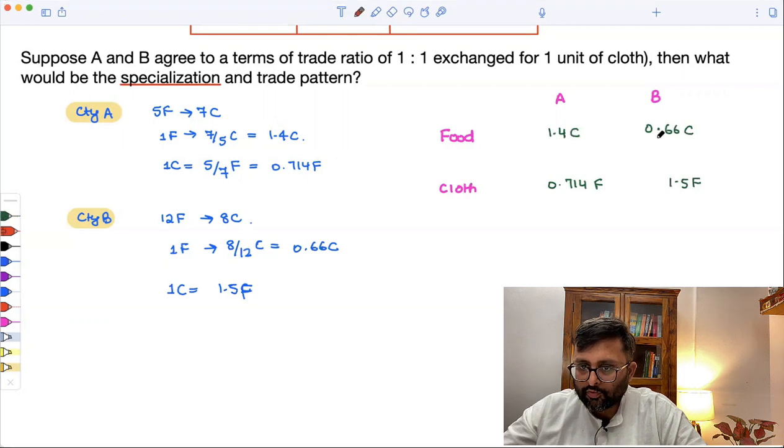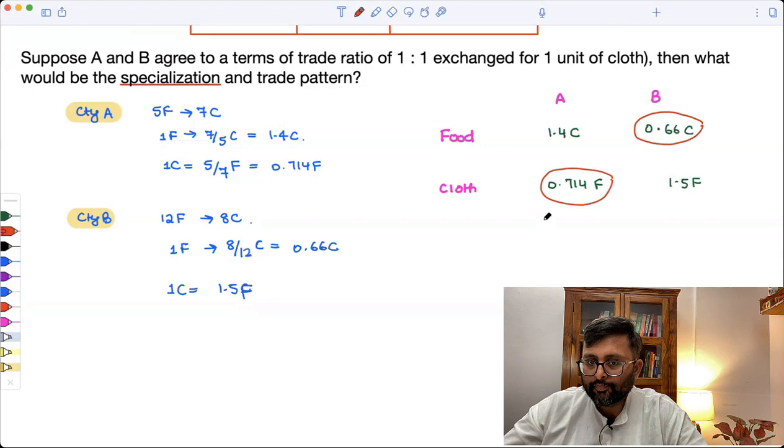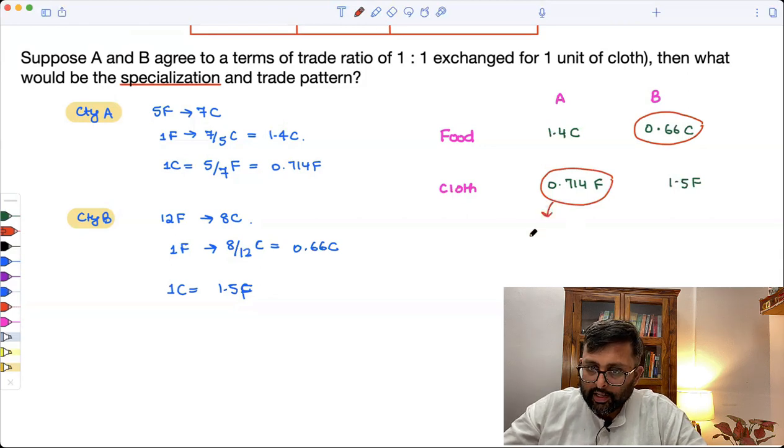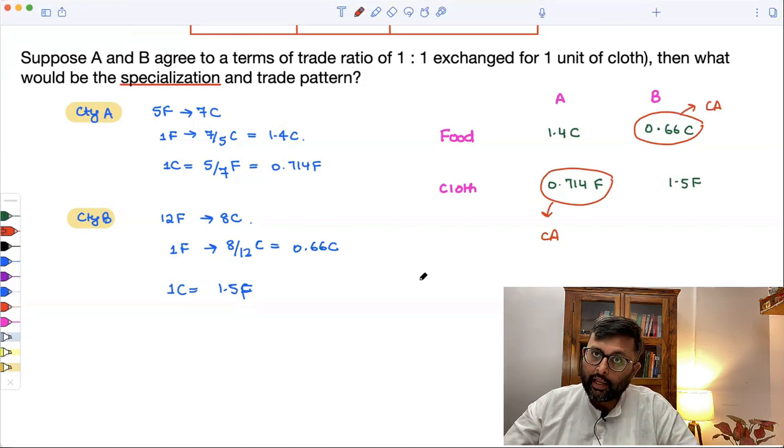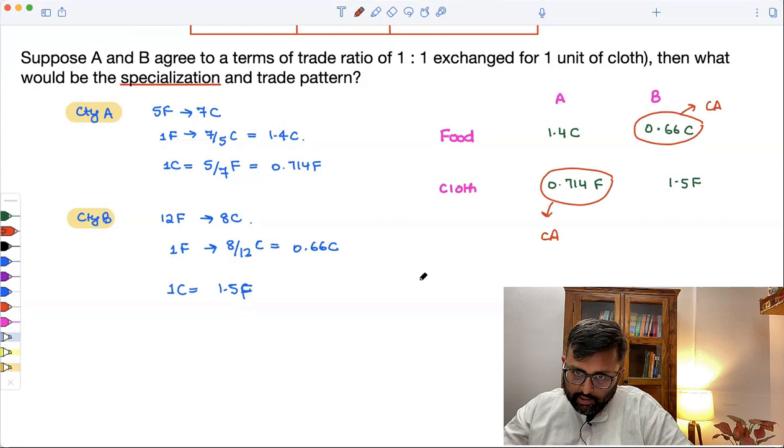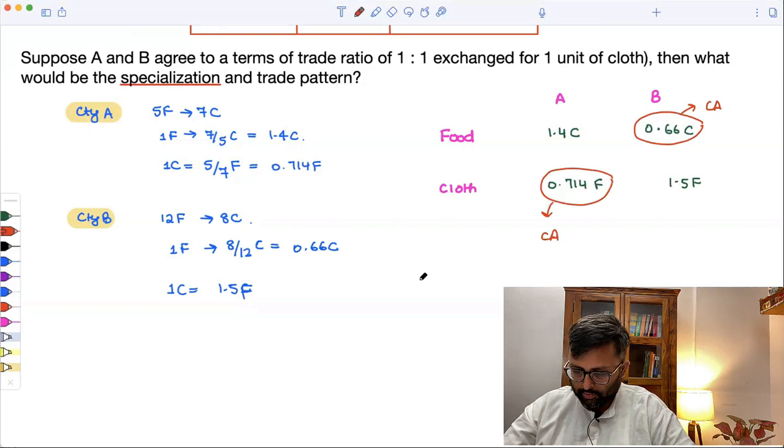So out of these two opportunity costs, this one is lower. Out of these two, this one is lower. So country A has a comparative advantage in cloth and country B has a comparative advantage in food. So country A should be exporting cloth and country B should be exporting food. That is the trade pattern that you have.